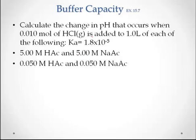So let's look at this. We're going to calculate the change in pH that occurs when you have 0.01 moles of HCl and we add it to each of the following. Now this is one of those problems where we add an acid to a buffer and we've done one before, so as you guys well know, we've got to do the stoichiometry first.